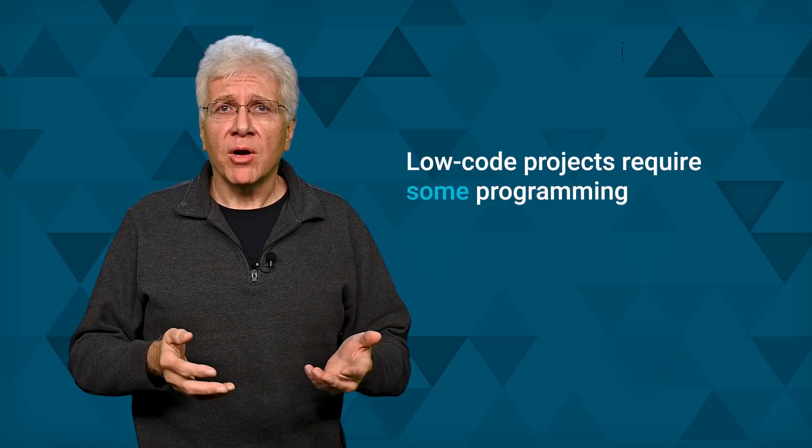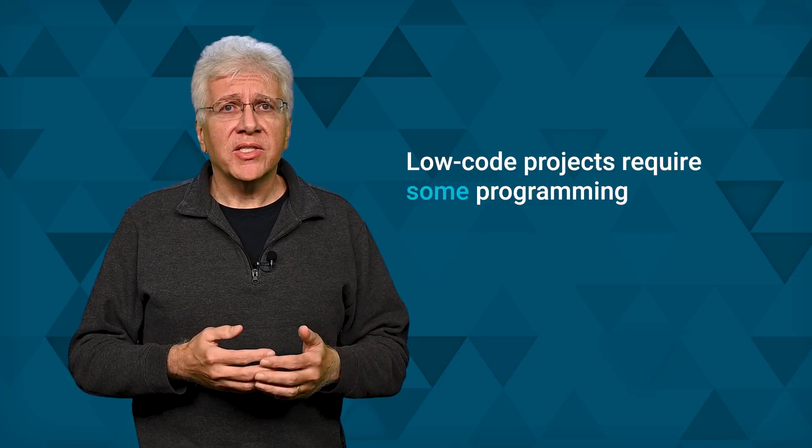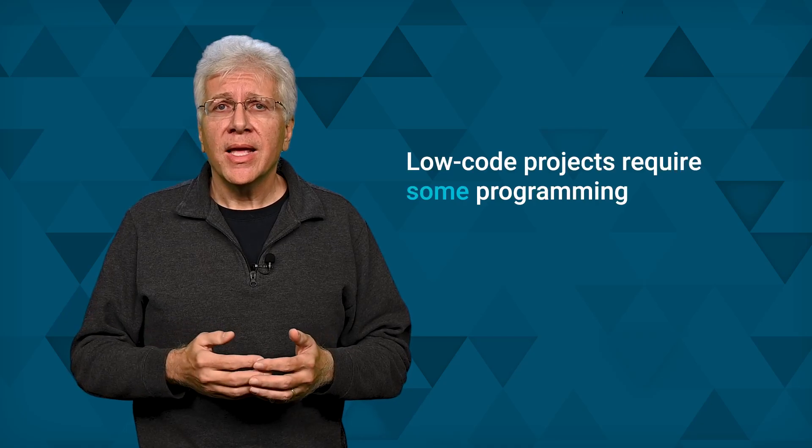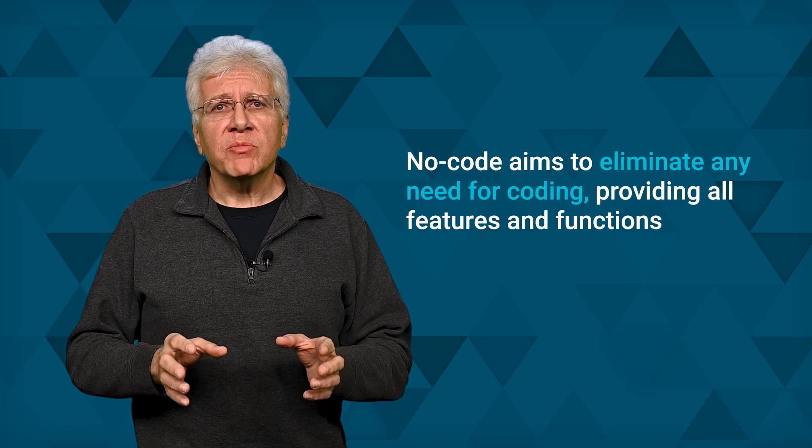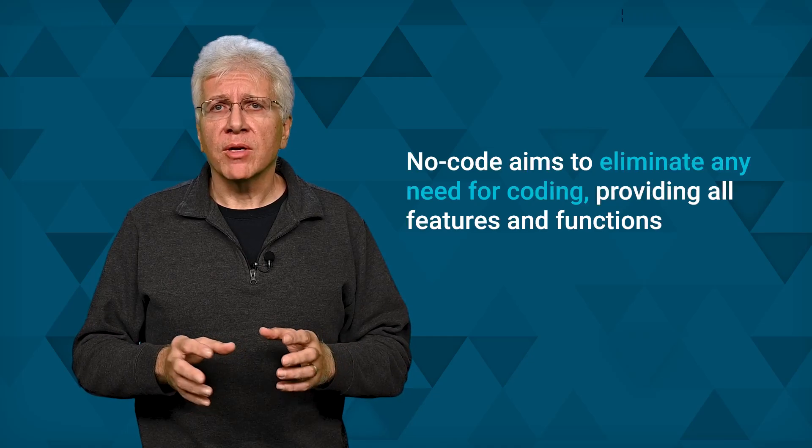Some see no-code systems as a subset of low-code platforms, but they're not the same. Low-code doesn't eliminate coding — many low-code projects require some programming, either to modify existing functional components or create new ones. But no-code does aim to eliminate any need for coding. No-code systems provide all features and functions with no need to add or alter components, and users don't need to know anything about programming or app design. So even though low-code is nothing like traditional software that might require thousands or tens of thousands of lines of code, a low-code project still involves some coding.